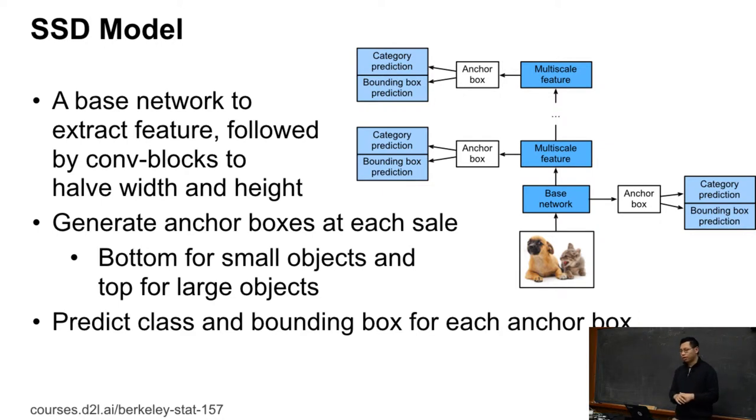The other thing here we call multi-box or multi-scale is, the base network gives you maybe 32 by 32 feature map. I can further halve the width and the height. And then on the reduced feature map, I can generate a bunch of anchor boxes and then do another category prediction and boundary box prediction. I do this multiple times. So the basic idea here, the bottom, which is the output of the base network, the feature map is still large. So I can generate small anchor boxes to catch the small objects. And in the top, every time we reduce the width and height of the feature map, we generate slightly larger anchor boxes, so we can try to catch large objects here.